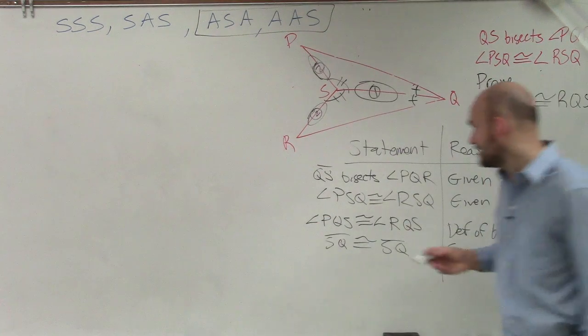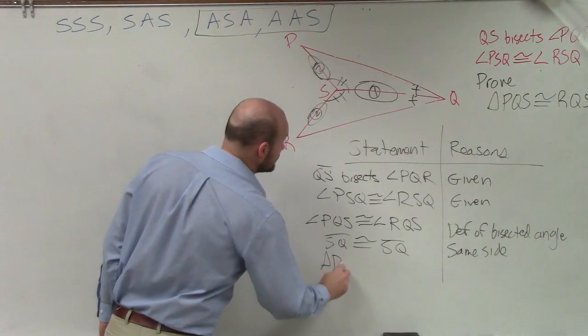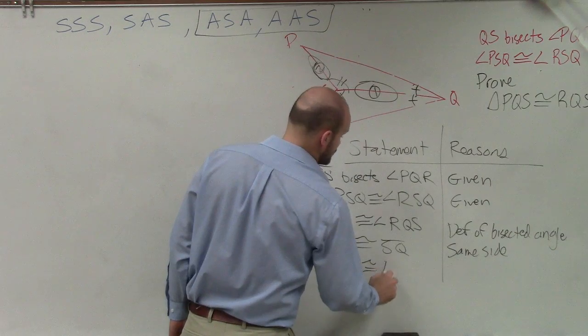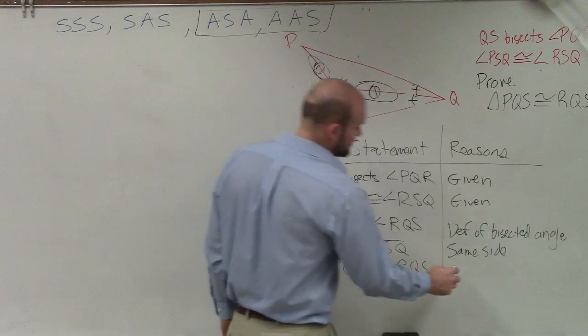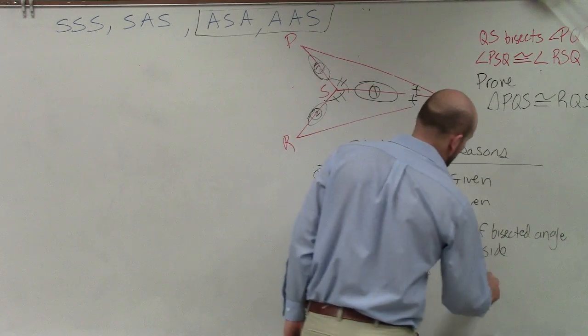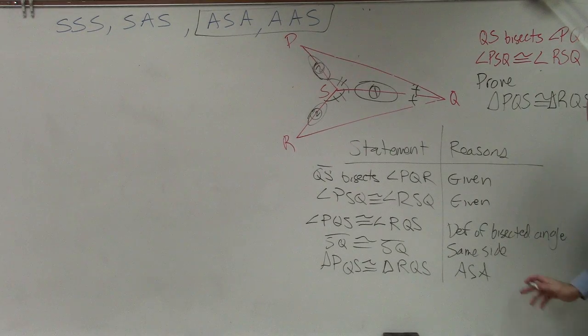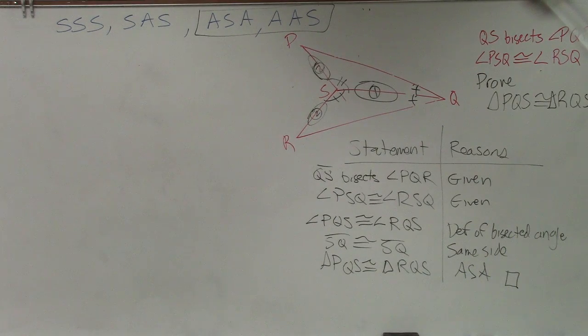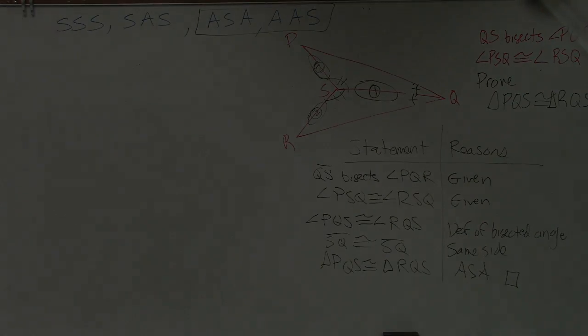So now, I can write my proof. Triangle PQS is congruent to triangle RQS. And why is it congruent? Because we have angle side angle. And then our box. Okay. So there's your example. Guys, these examples are going to take...